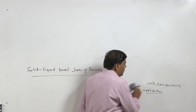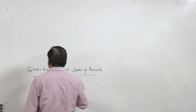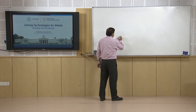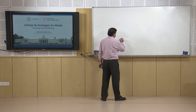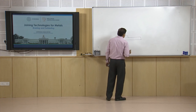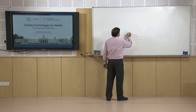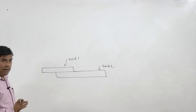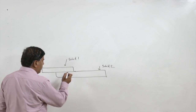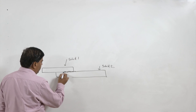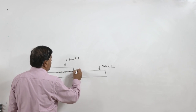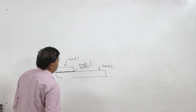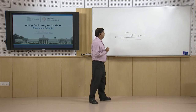As the name suggests, these processes fall in the category of solid-liquid based joining processes. Why are they called so? Because the base metals to be joined are kept in the solid state — they remain solid. While the material used for developing the joint between the two is brought to the molten state, which is called either braze material or solder, as per the kind of process to be used.